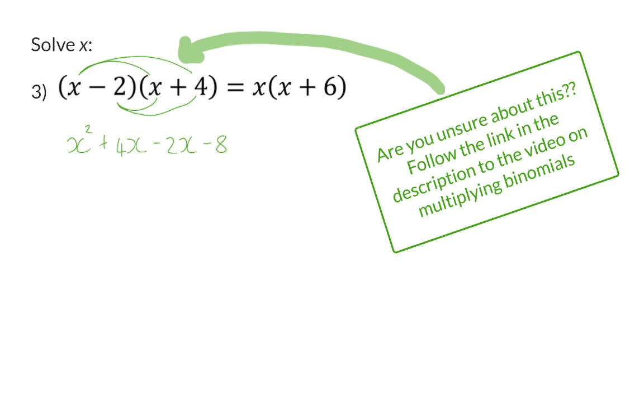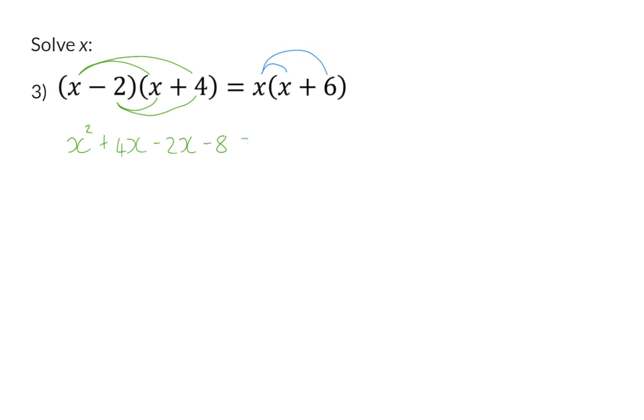On the right hand side, we also have a bracket, and here the x in front needs to be multiplied in. x times x will give me x squared, and x times 6 is plus 6x.